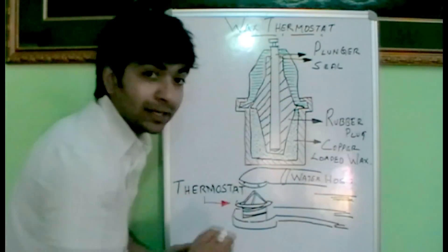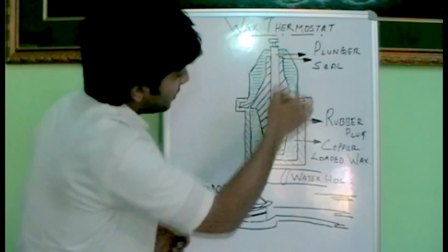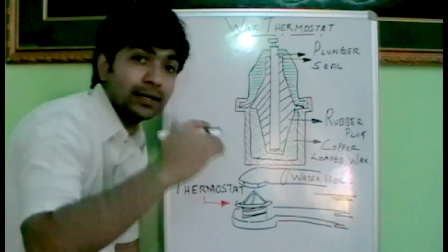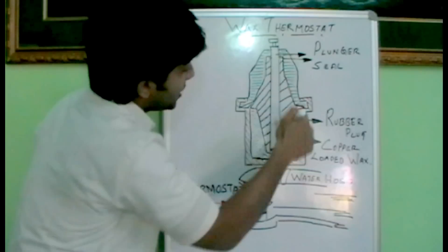Here the drawing of wax type thermostat is shown. This is the plunger and the top of the plunger will be connected towards the valve at the top of the thermostat.